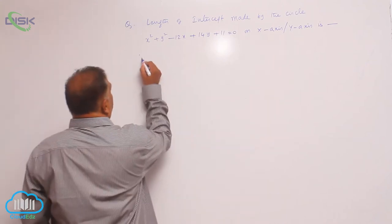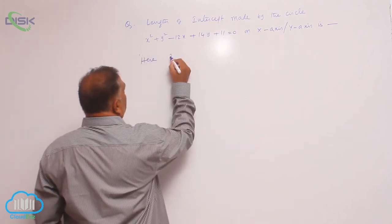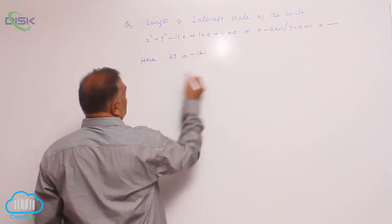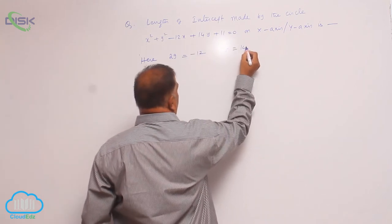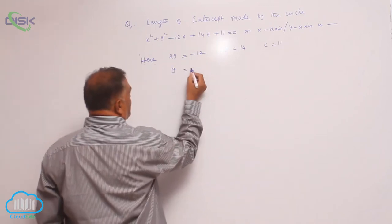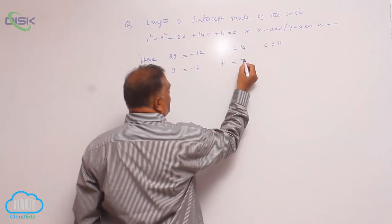Let us see. So, here you observe that 2g equals minus 12, 2f equals 14, c equals 11, therefore g equals minus 6, f equals 7.